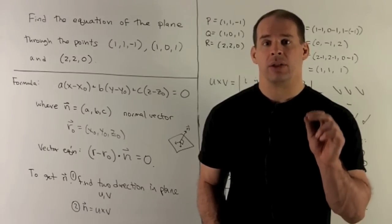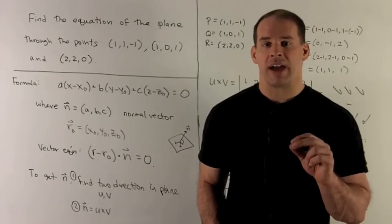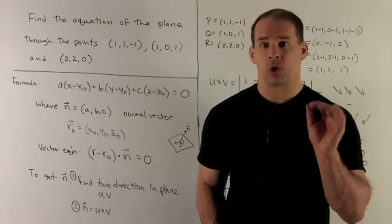Next, I need to find the normal vector. How do we find that? First, I find two directions in the plane, and then I take the cross product.